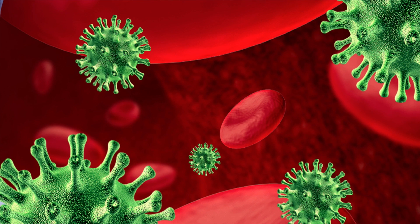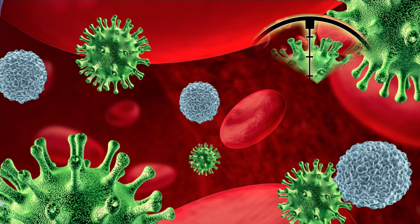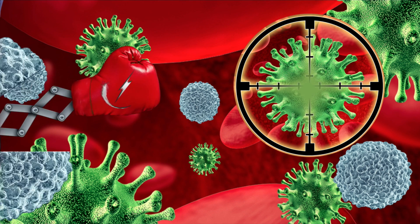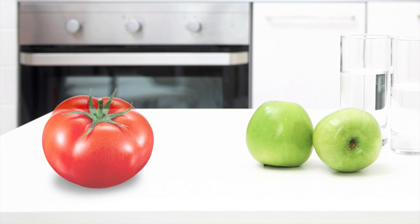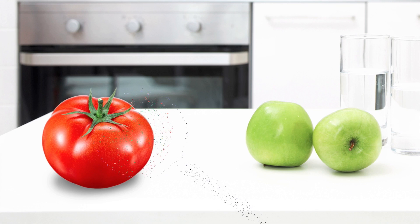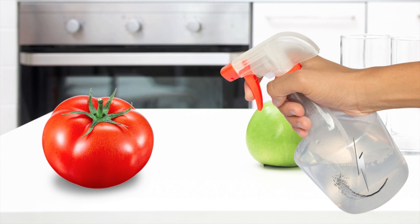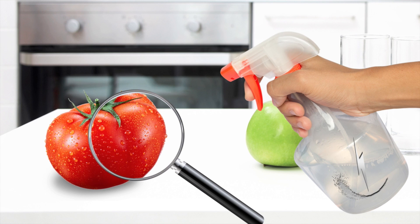Inside the body, it helps destroy pathogens through a process called phagocytosis. Essentially, the cell membrane bursts and destroys the DNA — it is no longer able to mutate or multiply. Outside the human body, the hypochlorous acid at specific concentrations destroys the cell membrane of certain bacterial and viral cells, preventing these cells from doing any further damage.